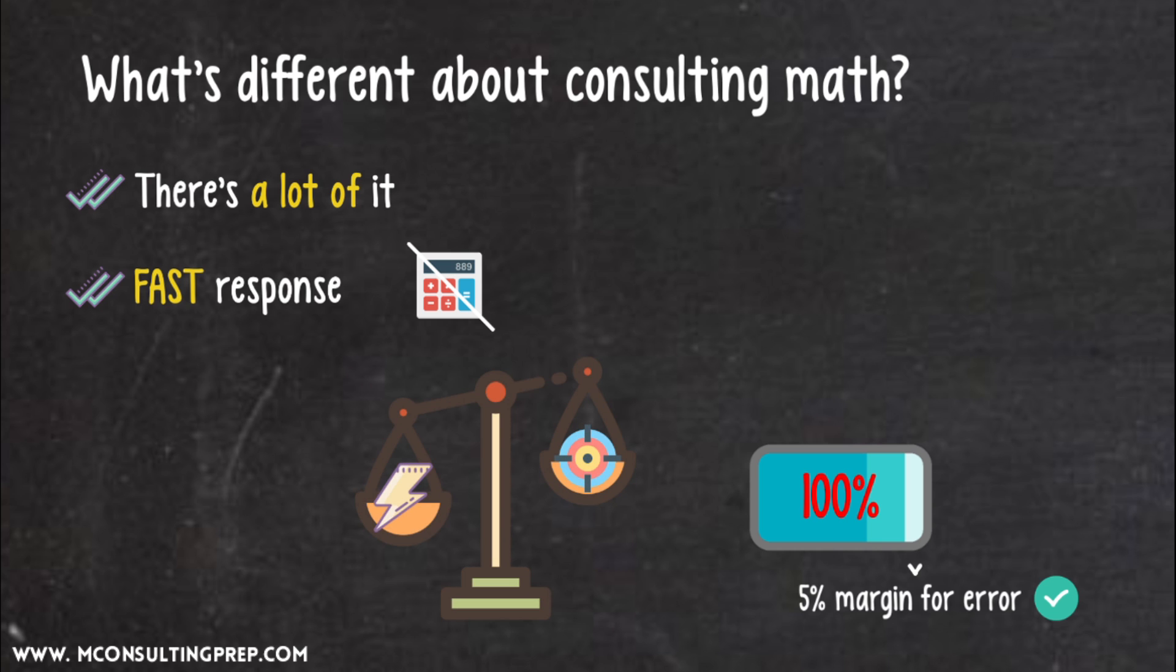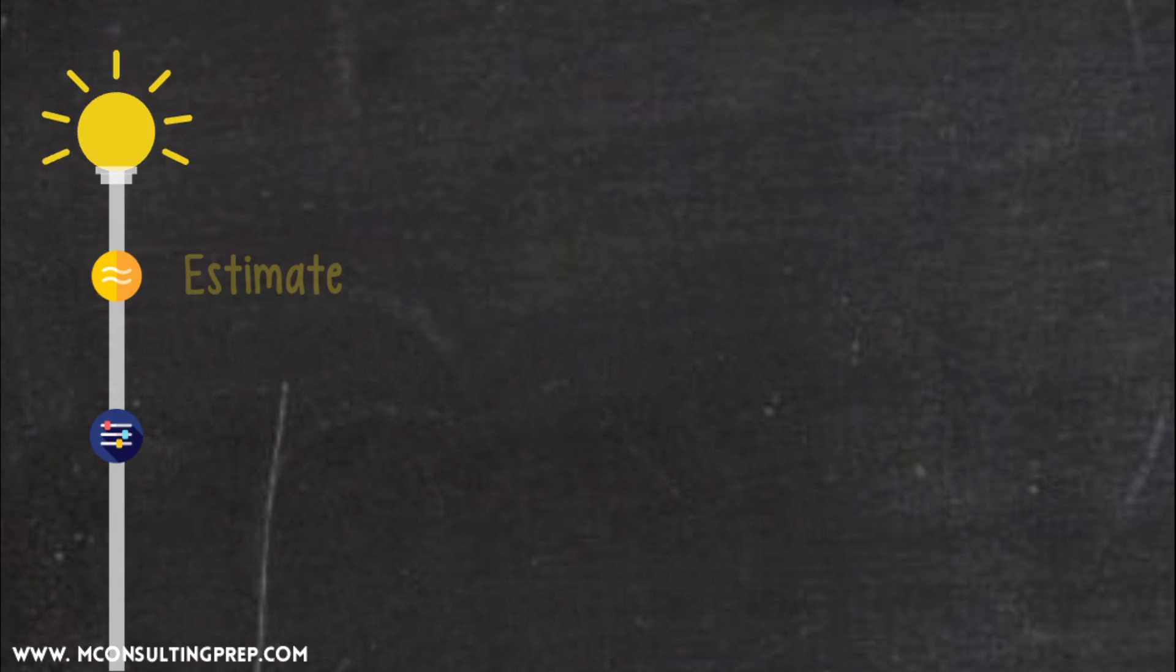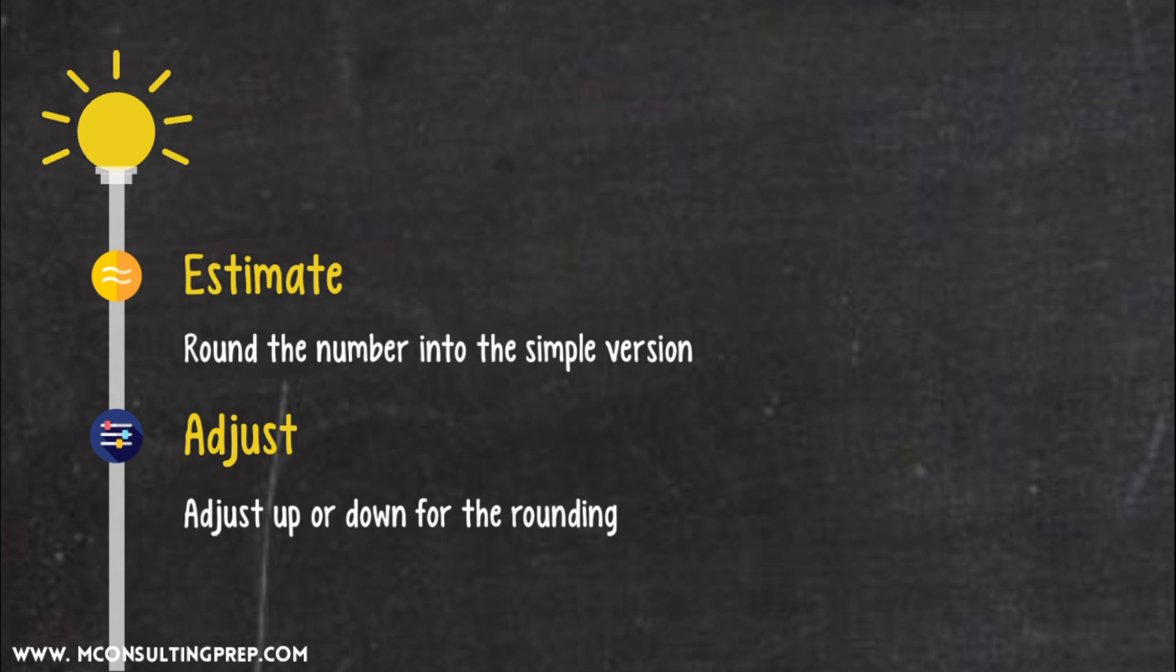Many times, we can trade a tiny bit of accuracy for a lot more speed. With my method, you'll eventually be able to do calculations with just a 2-3% margin for error. It's all about estimation and adjustment. In the estimation phase, we round the number into a simple version we can easily work with. In the adjustment phase, we take the result and adjust up or down for the rounding we did earlier. Depending on the level of accuracy required, we can spend more or less effort on this adjustment phase.